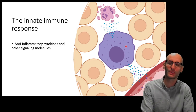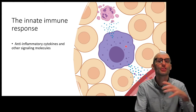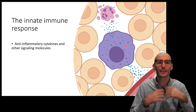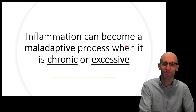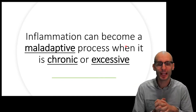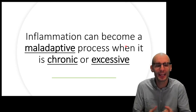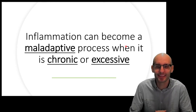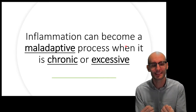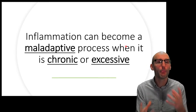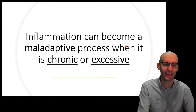Then the resident immune cells, if they've done their job, will do anti-inflammatory cytokine signalling to cool everything down and turn off the immune response. However, inflammation can become maladaptive — damaging — and contribute to disease when it is particularly chronic or excessive. Those are two of the main points in which inflammation can become a very damaging thing.